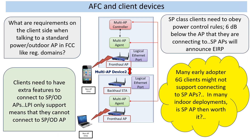What about when we are starting to have standard power, external antenna APs, outdoor APs, which will all implement AFC in regulatory domains like the US — what are the requirements on the client's side? Will our standard low power client devices be able to connect to those standard power APs seamlessly? The quick answer is not so straightforward, because standard power implementations — I am just using standard power as an overall way to signify anything other than LPI — require slightly different rules.